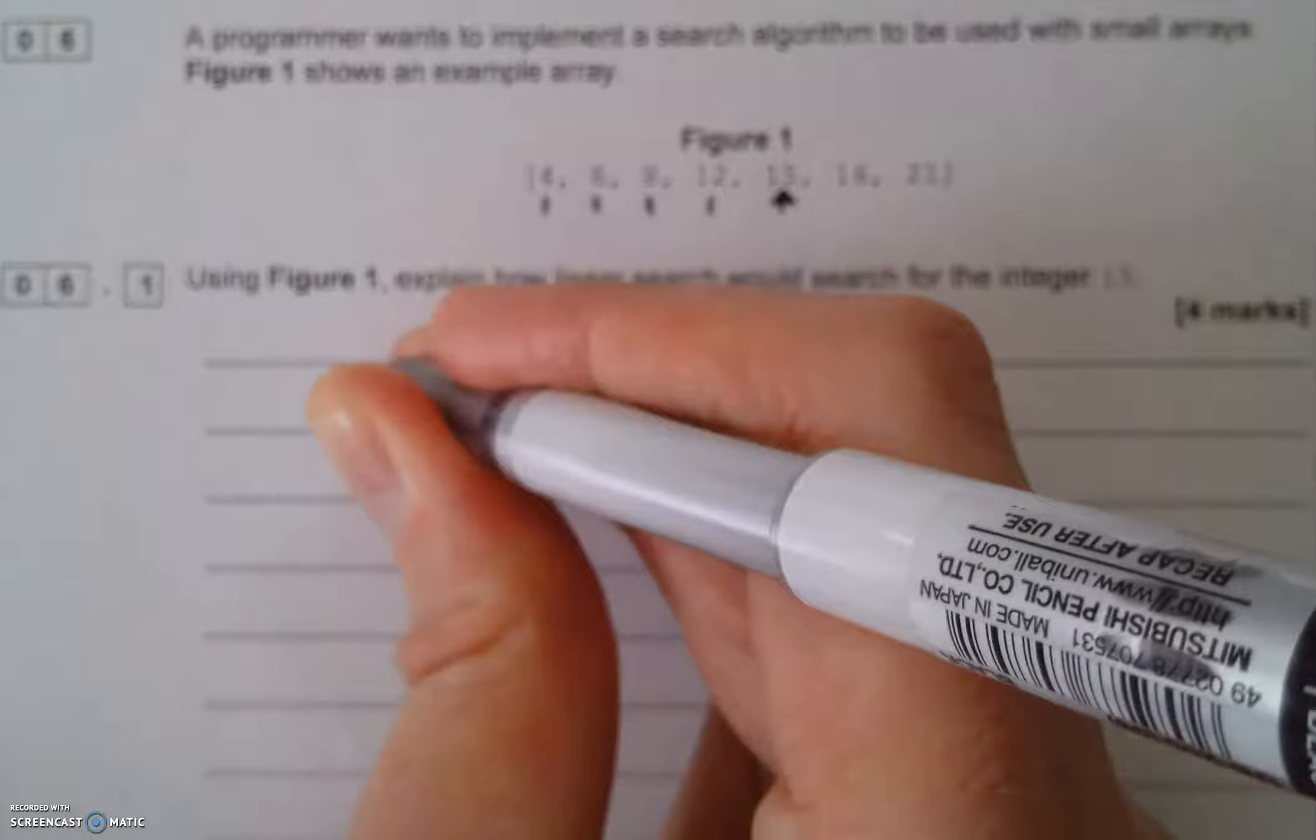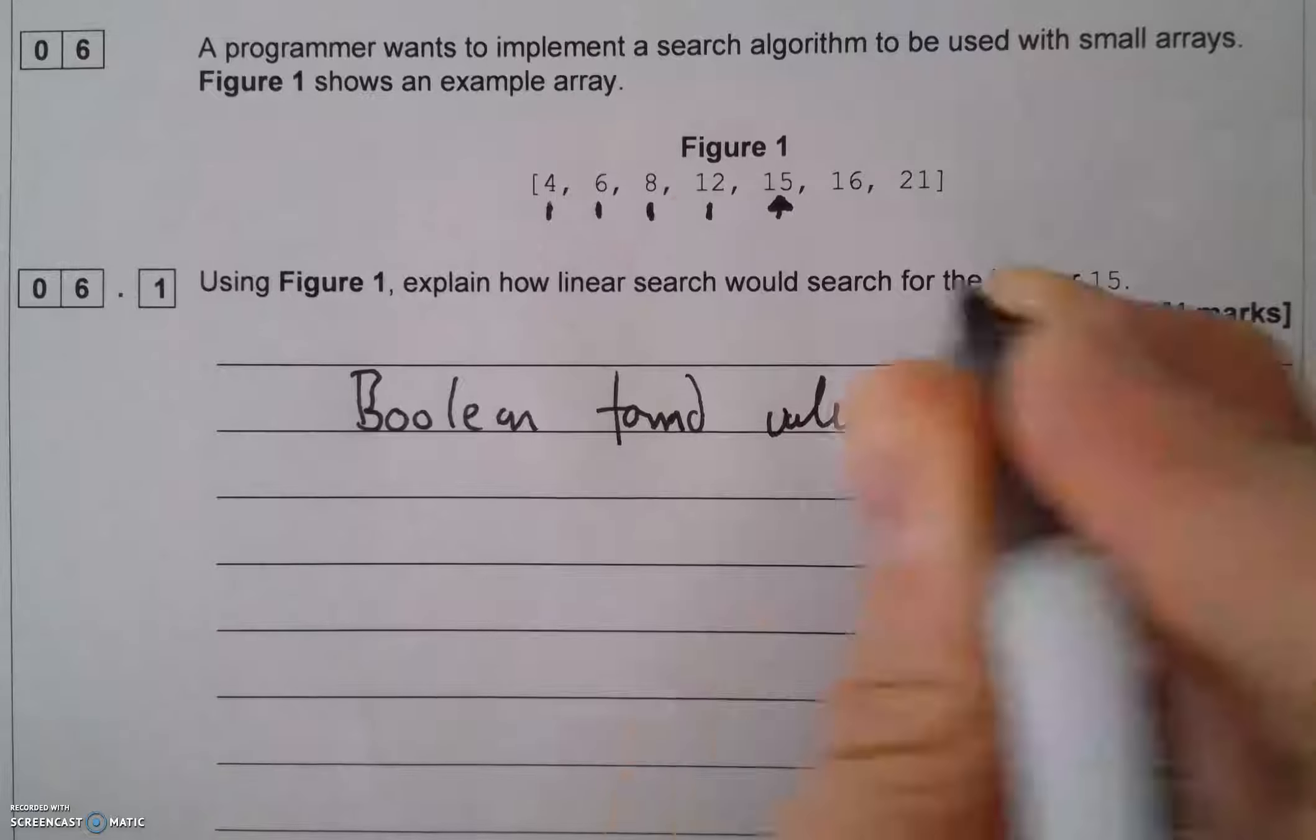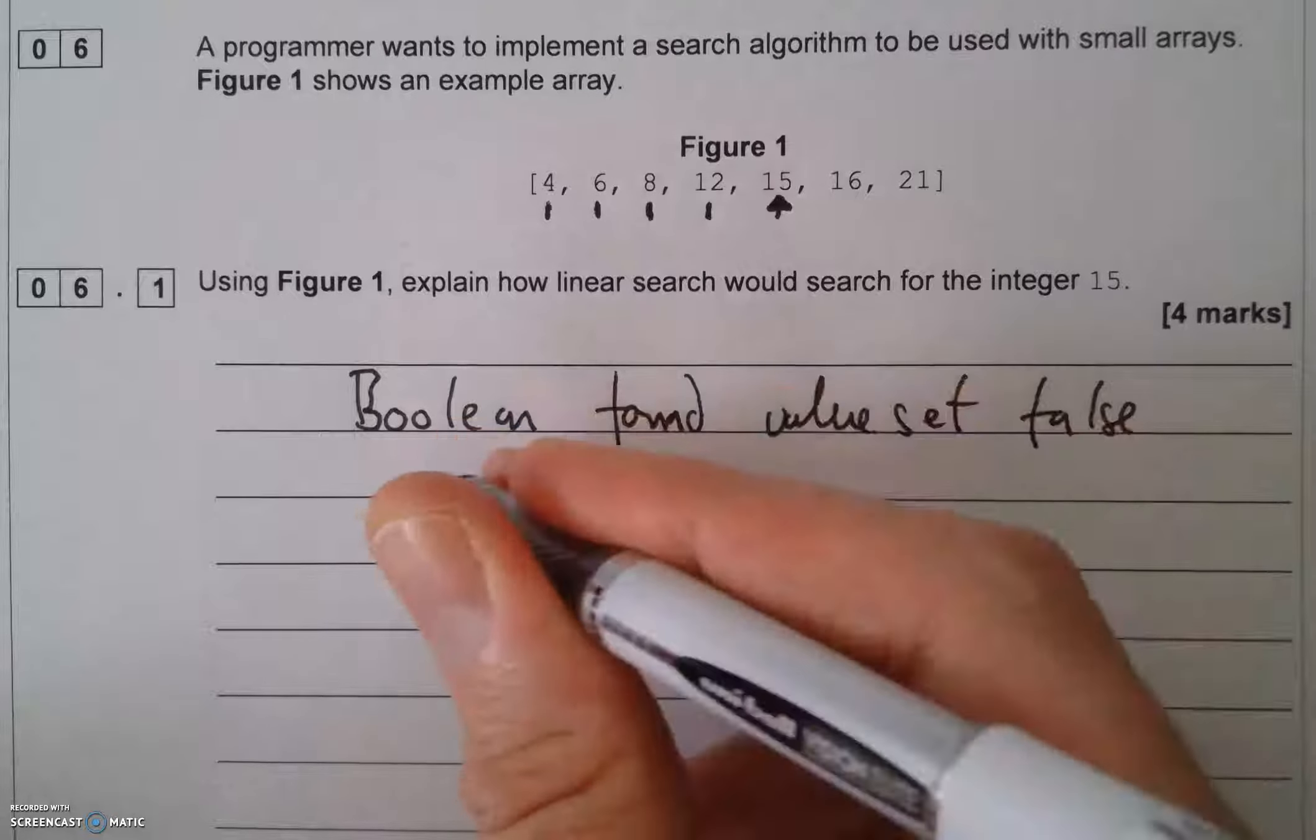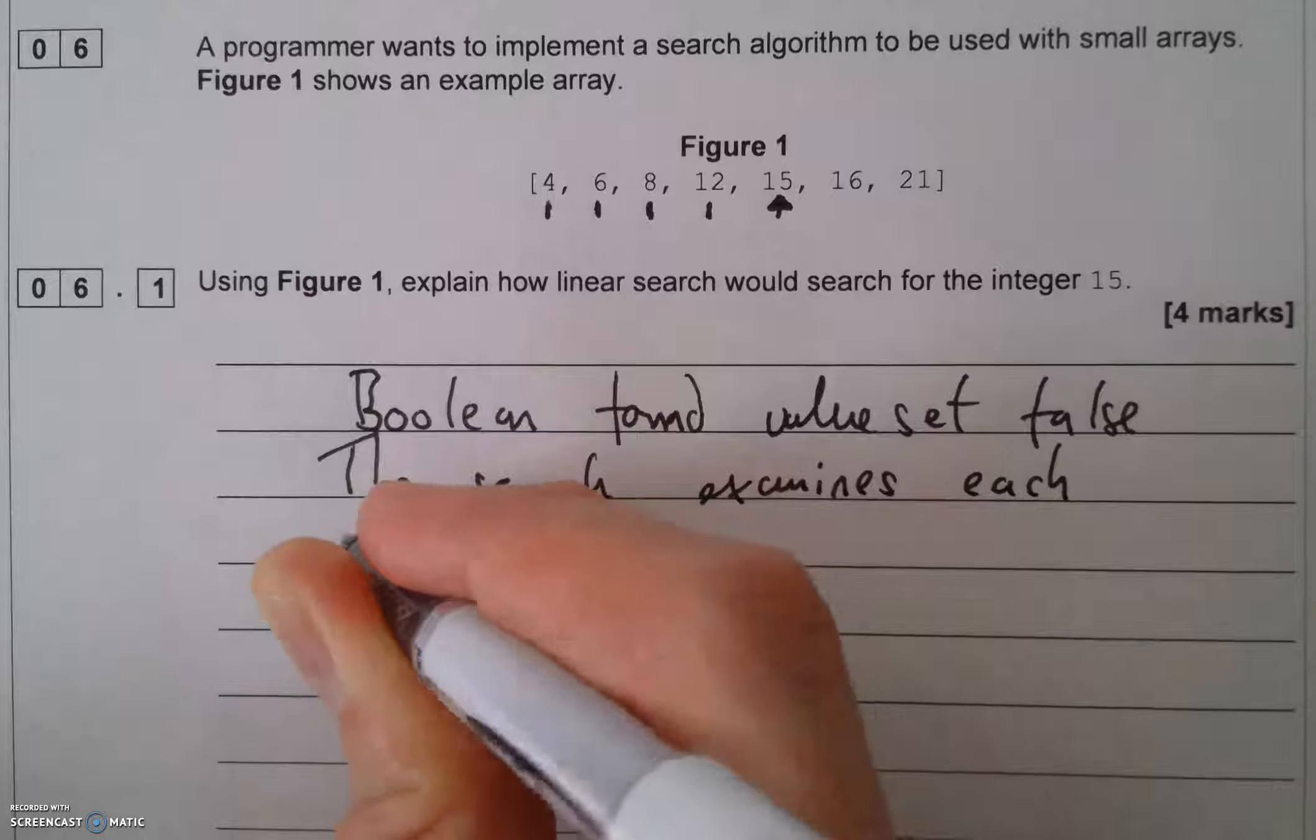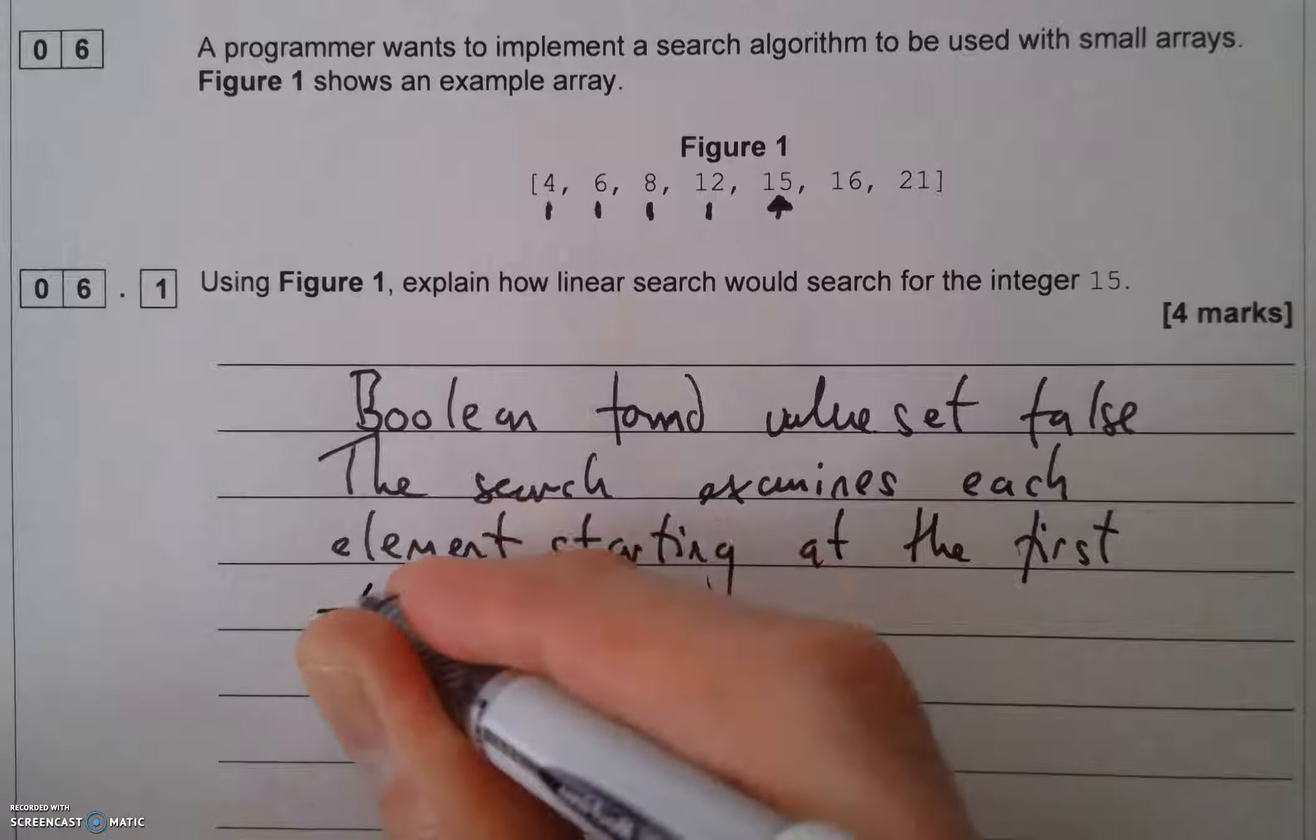Rather than looking at each number individually until I find my match, what I want to be writing is: starting with my boolean found value set to false. When I start off, I'm saying that I haven't found the number yet. The search examines each element starting at the first, which is four.